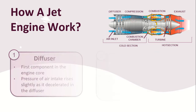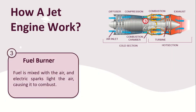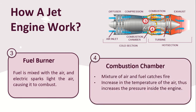Once the air is pressurized, it is forced into the combustion chamber. In the fuel burner, fuel is mixed with the air and electric sparks ignite the air causing it to combust. The air is mixed with the fuel and then ignited. There are as many as 20 nozzles to spray fuel into the air stream. The mixture of air and fuel catches fire and provides a high-temperature, high-energy airflow. When the temperature increases, the pressure inside the engine also increases, and the combustion causes the air-fuel mixture to rapidly expand, forcing the air out through the turbine.